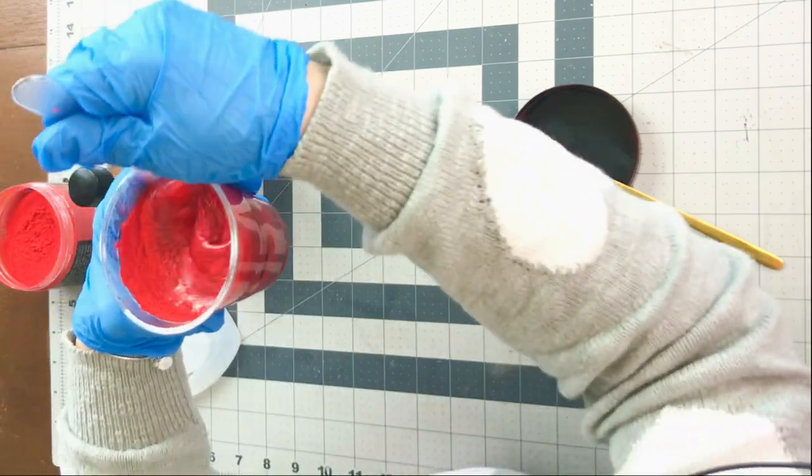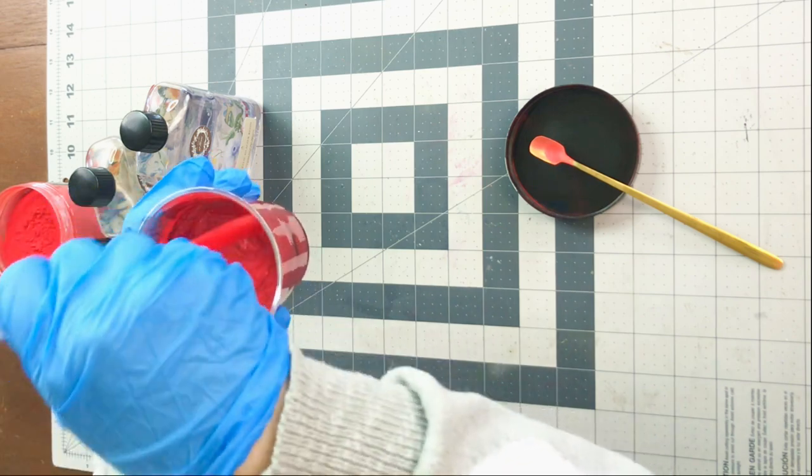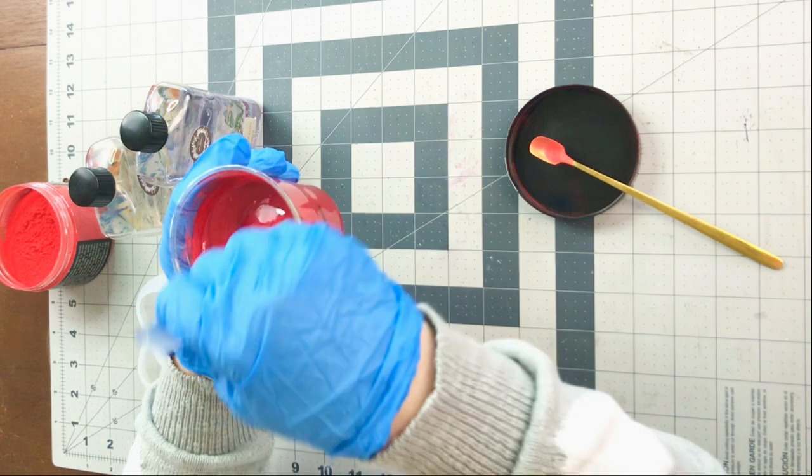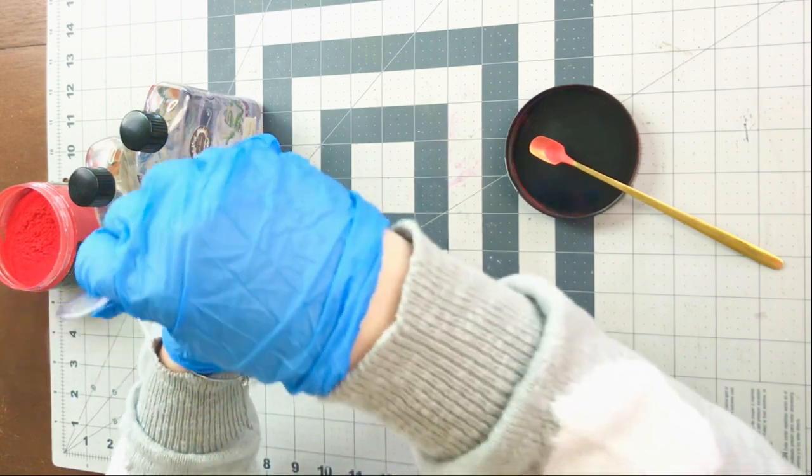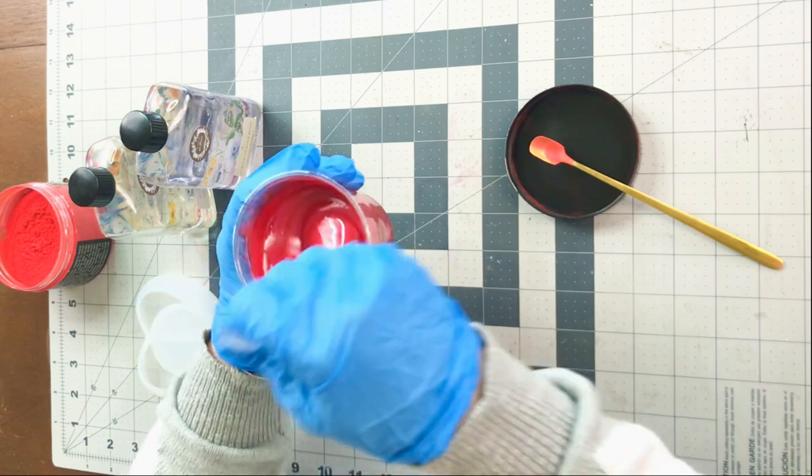So just took a tiny little spoon here and plopped out two scoops of powder. It doesn't take much to make this work. And again, I was a little too vigorous with the stirring, but you just mix all of the ingredients together, the powder with the resin mix. And it turned out to be such a beautiful iridescent almost color of red.